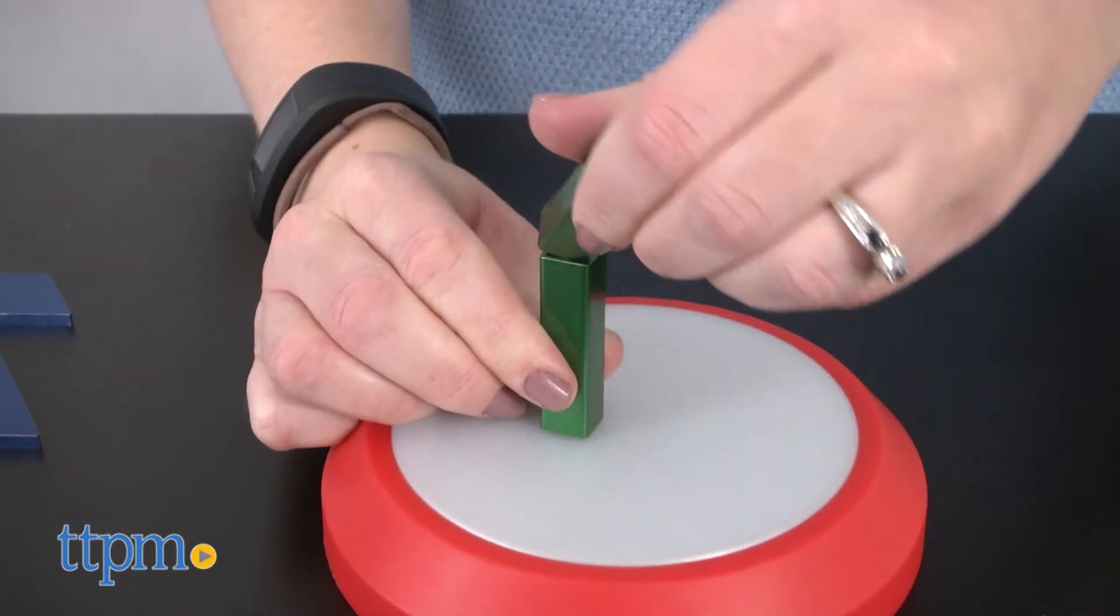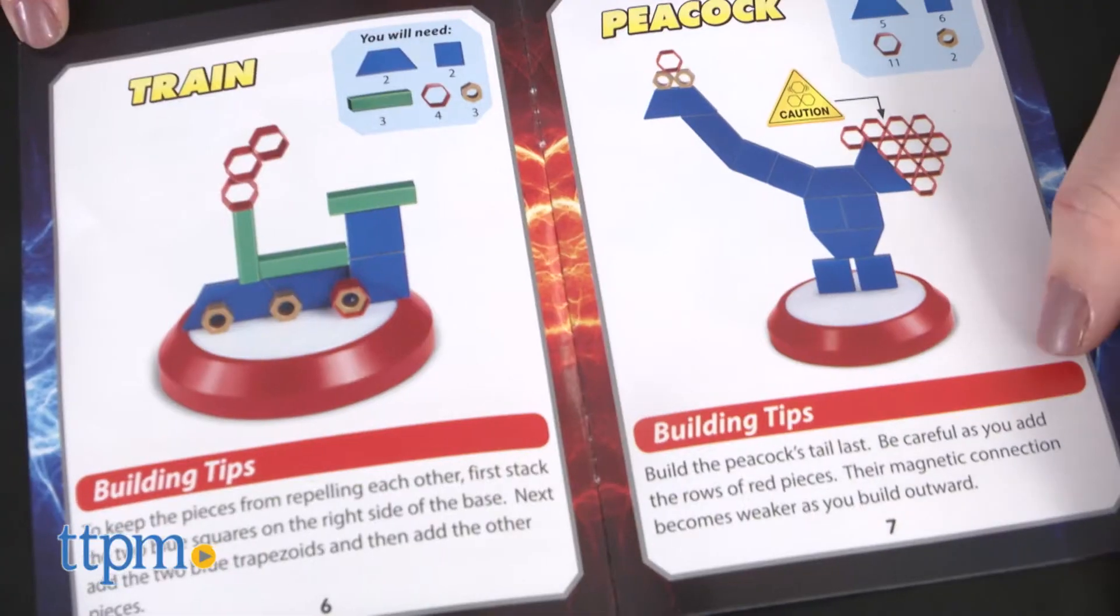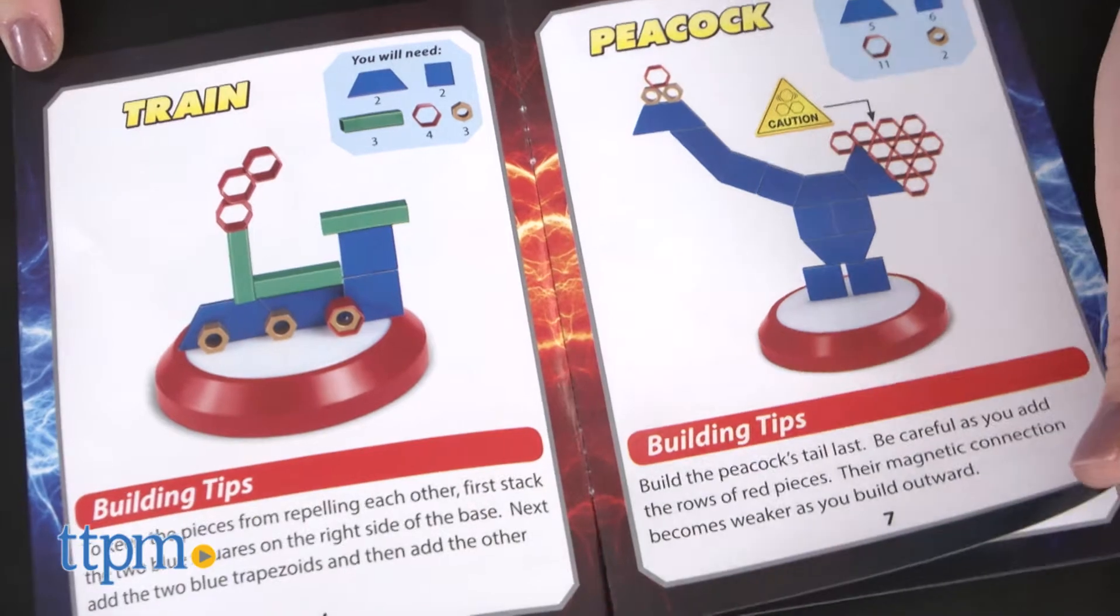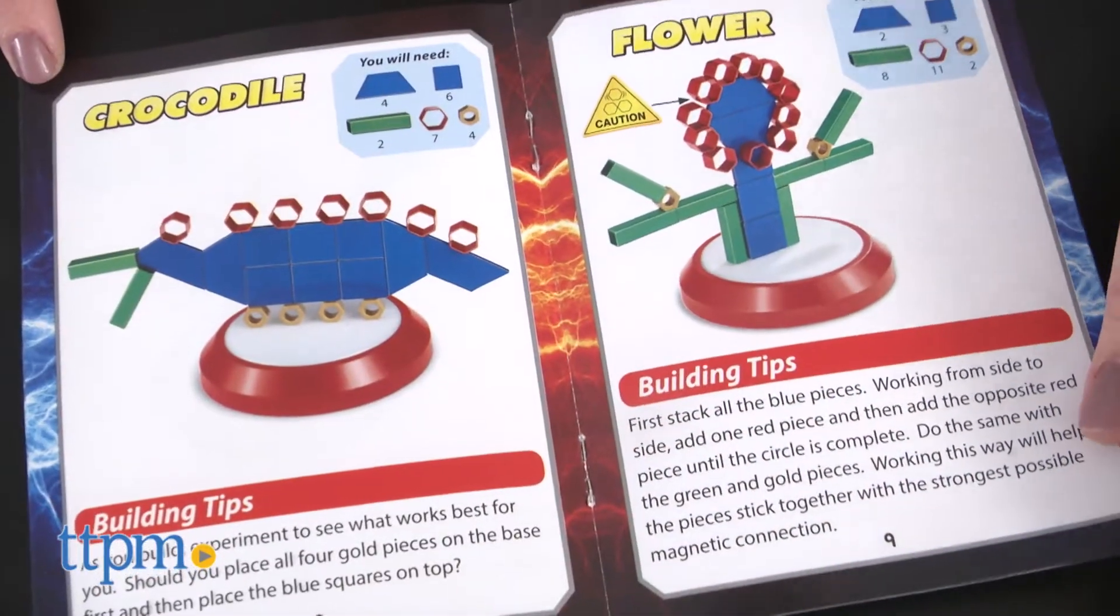The set includes 35 metal building pieces and you follow the instructions to build 11 different things on the magnetic base or come up with your own designs.